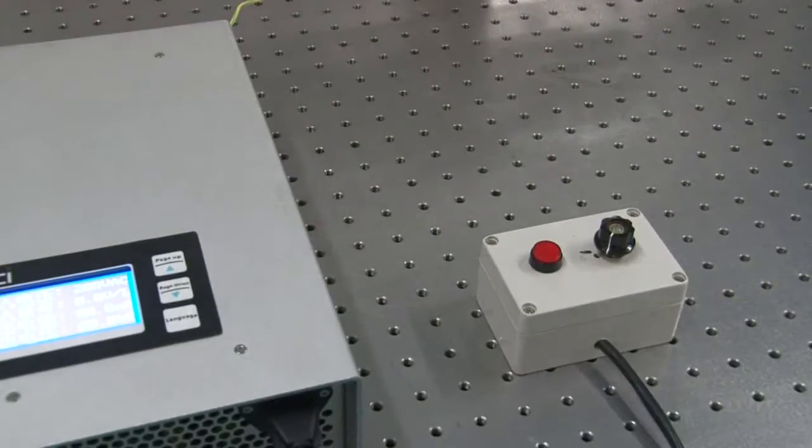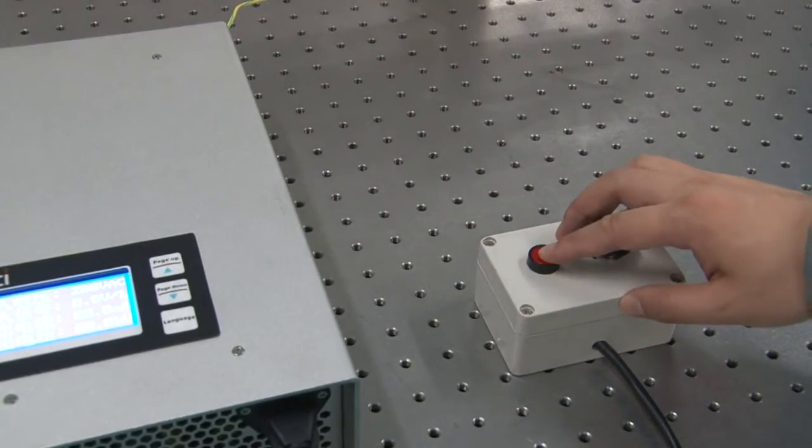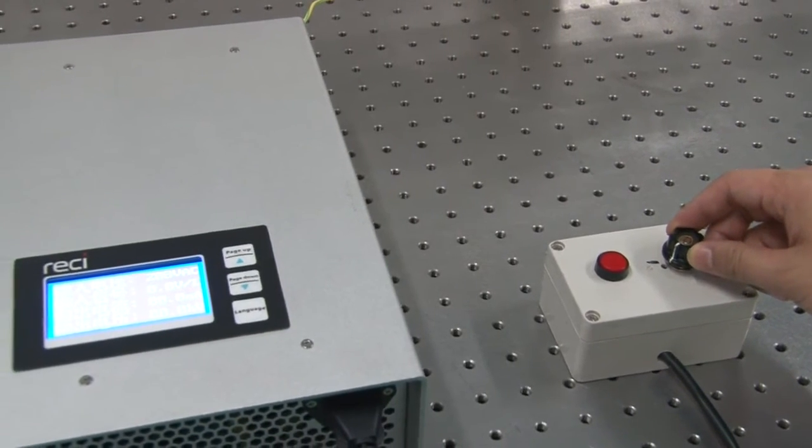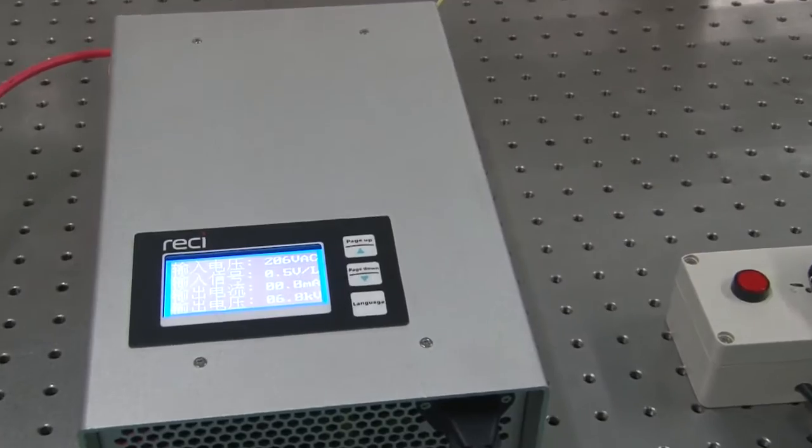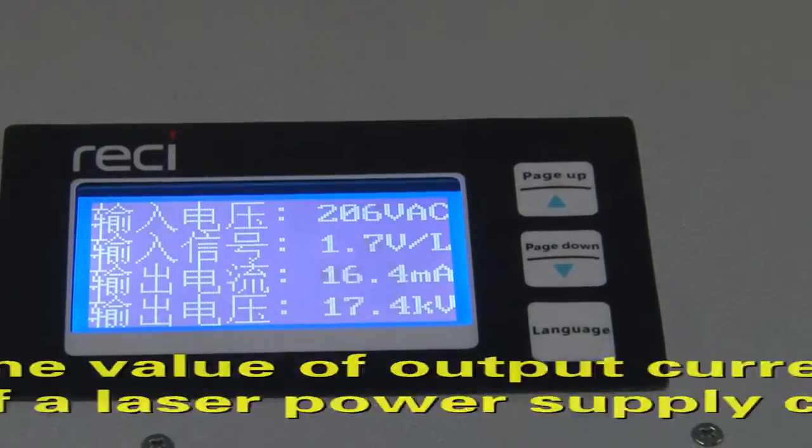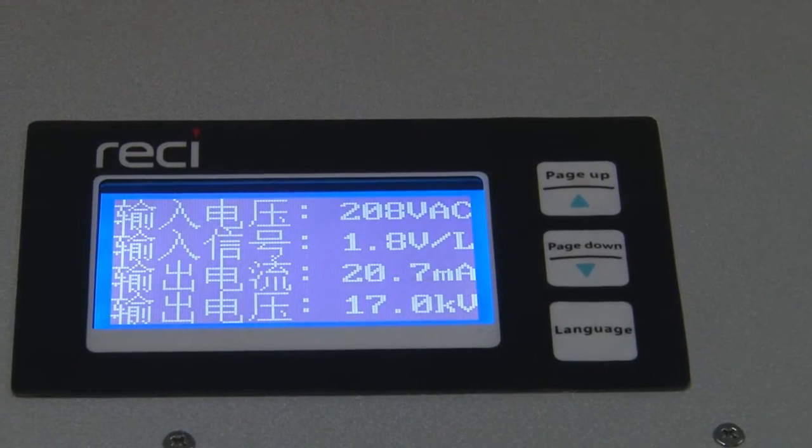Now, please turn on the power supply of a laser tube and turn up the current gradually. On the display of the laser power supply, it can be seen that the current increases gradually. The current is set to a specified value.